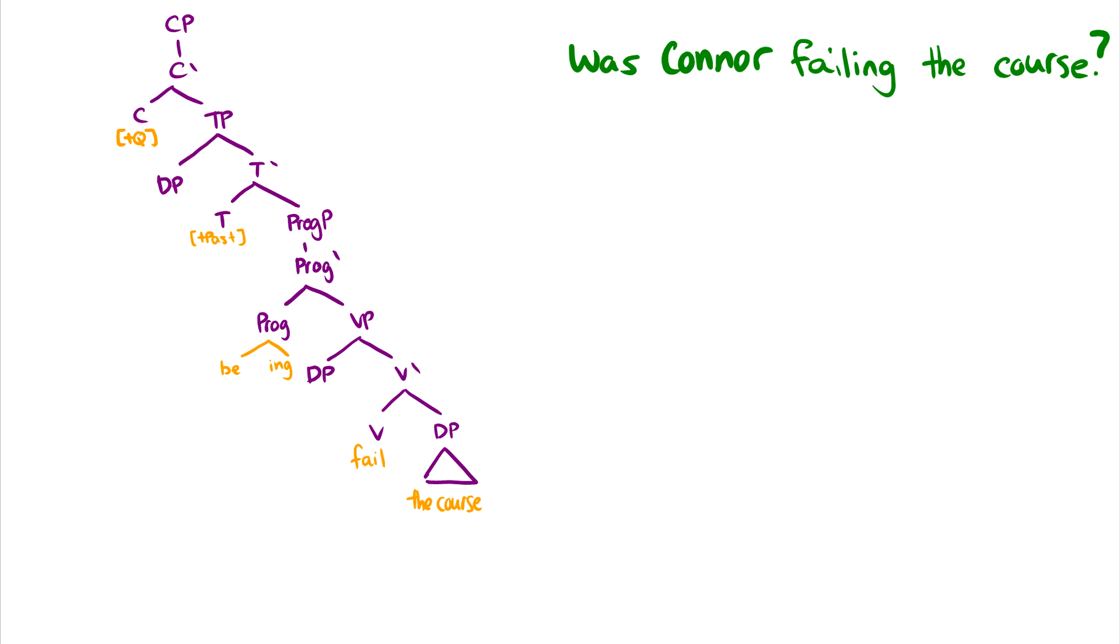So here's another question or another sentence. Was Connor failing the course? And this is a question. But again, the key here is that we still have the subjects and objects being generated as spec VP. So fail the course. The course is our theme. So that's what they're failing. And who is doing the failing?